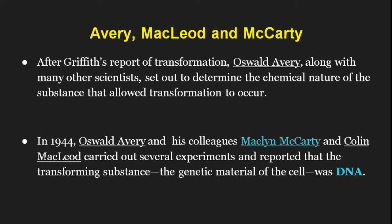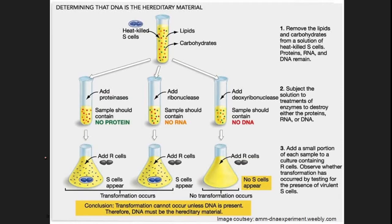Now let us see the experimental setup. At first, they took S-strain bacteria — we have to remember that the S-strain bacteria was the virulent strain. The S-strain bacteria was taken and heat-killed. After heat-killing the S-strain bacteria, an extract was prepared from this heat-killed S-strain bacteria. The extract contained all the materials present in the heat-killed S-strain bacteria.